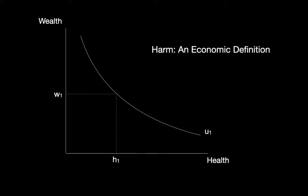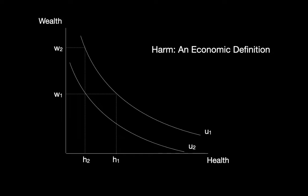To understand what we mean by harm, consider the following. U1 represents Ann's level of utility before an accident. Recall that utility is a measure of well-being or satisfaction. Here we assume that Ann's utility is a function of health and wealth. Any point along the indifference curve labeled U1 is a combination of health and wealth that yields the same level of utility U1. Initially, Ann has the combination of health and wealth H1 and W1. After an accident, Ann's health declines from H1 to H2, so Ann moves to a lower level of utility represented by indifference curve U2. We assume Ann's accident did not affect her wealth. Our model suggests that if Ann is given enough additional wealth, it is possible for her to return to the pre-accident level of utility even if she does not recover her health. If her wealth is increased to W2, she will be back to the original level of utility. So if Ann is given damages equal to the difference between W2 and W1, she will be made whole.